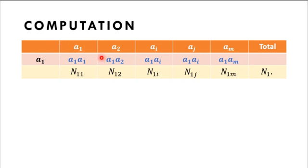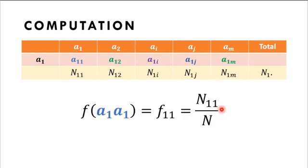That is, the genotype frequency is equal to the number of individuals having that particular genotype all over the total number of individuals in that particular population. So, by substituting the symbols that we use, we can get the frequency of the genotype, A1, A1.